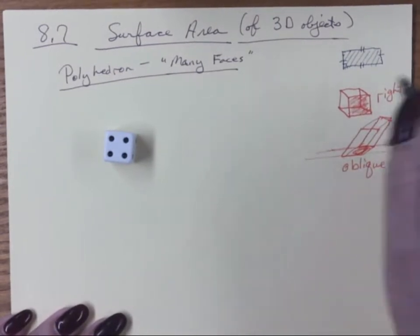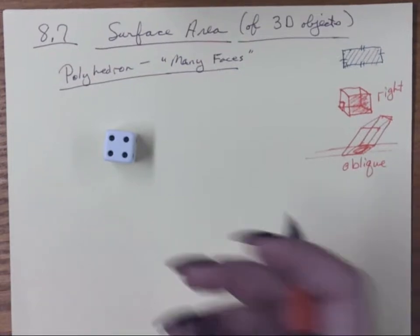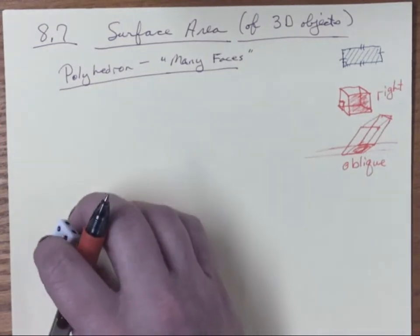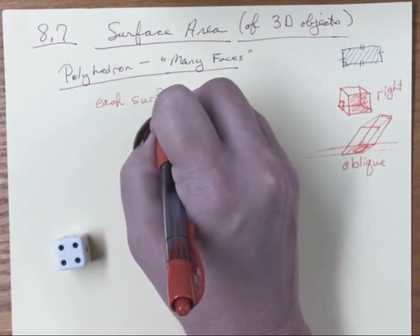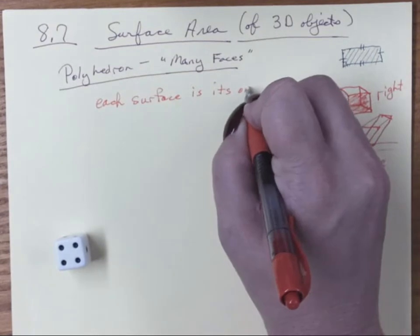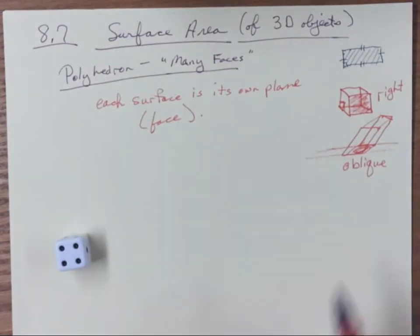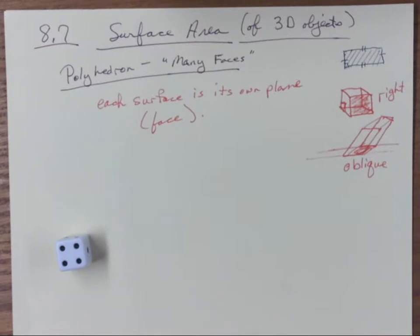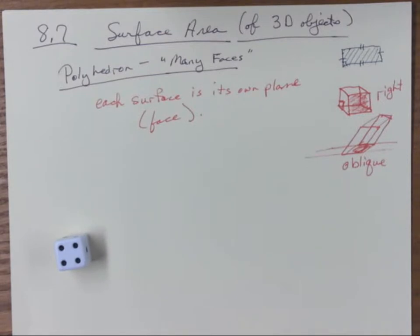We call it 'right' because the vertical is at a 90-degree angle with the horizontal. Most of the time we'll deal with right polyhedra. On this six-faced die, each surface is its own plane — each one is its own face. Here I've shaded the front face, and that entire square surface is one face.